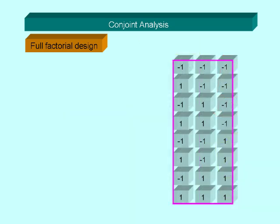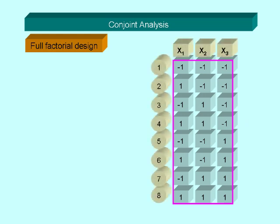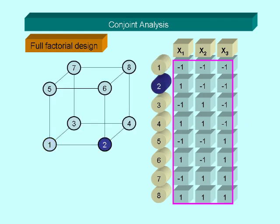We treat the three attributes as variables, each of them with the value of minus one or plus one. In a graphical illustration, each combination is represented as a point in a corner of a cube. One dimension of the cube shows the color, the second shows the memory size, and the third the delivery time.